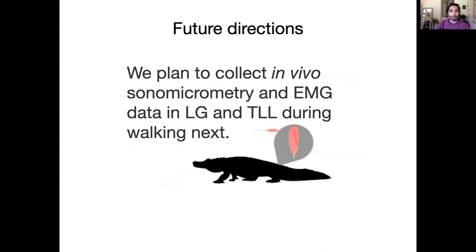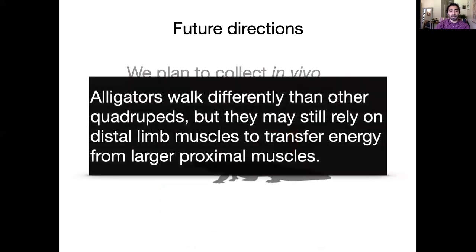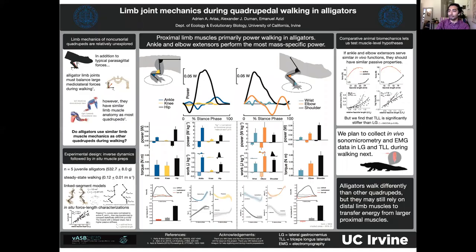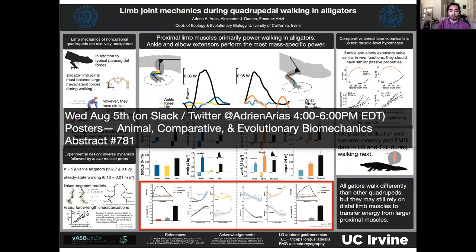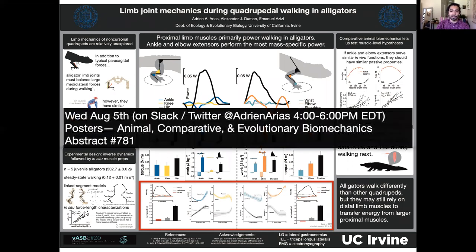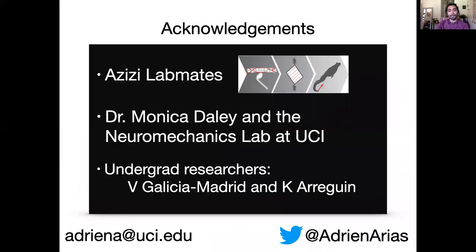We plan to follow this up with in vivo measurements of muscle fascicle length and activation timing during walking. For now, what we can say is that alligators, although they walk a little differently than other quadrupeds, may still be using distal limb muscles to transfer energy from proximal limb muscles. These are the main points of my poster, but there are some details on the kinetics and kinematics I didn't present — feel free to catch me on Slack or Twitter if you want to discuss those. Thank you for listening.